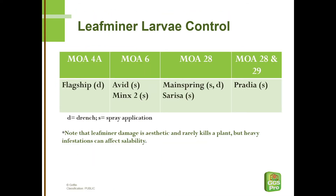For control of leafminers in mums, it's desirable to have systemic or translaminar activity at minimum and to have a good residual activity. Products that fulfill those criteria are listed here that are effective for leafminers. We have both drench and spray options, and product choice can be affected by how close the plants are to bloom or to sale in terms of pollinator safety.